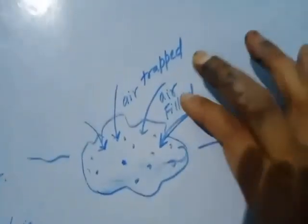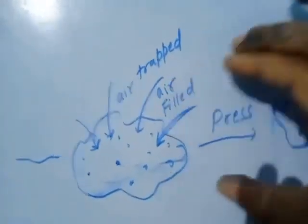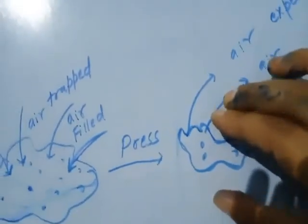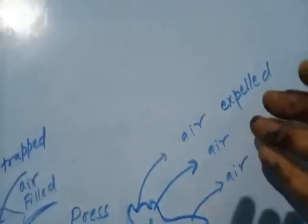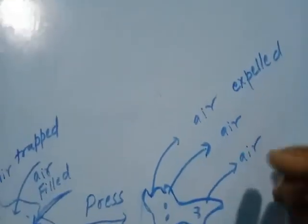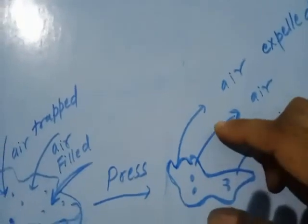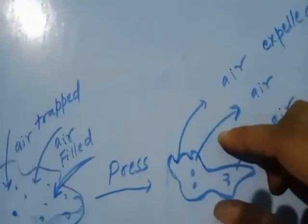When we press the sponge, the air inside it is expelled out and we can compress it further. So we can say that there are some solids which can be compressible.